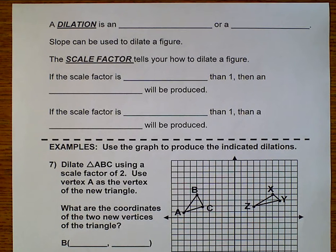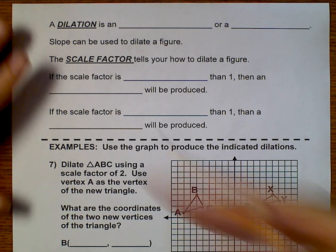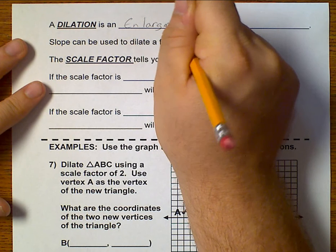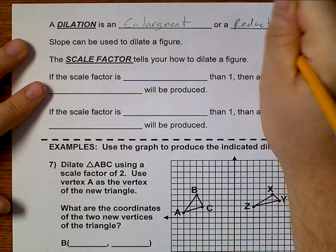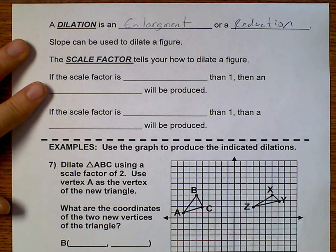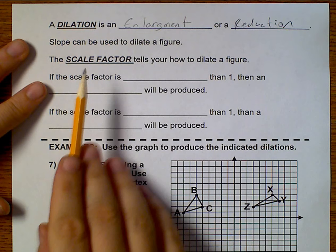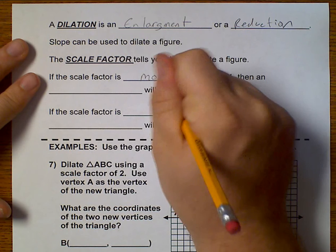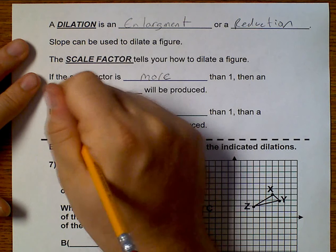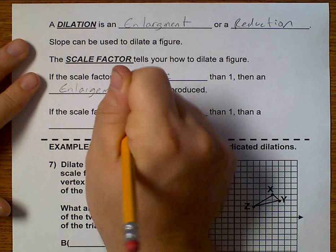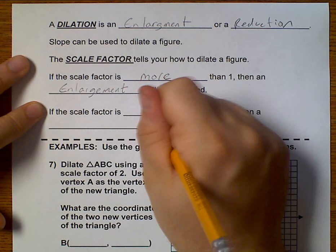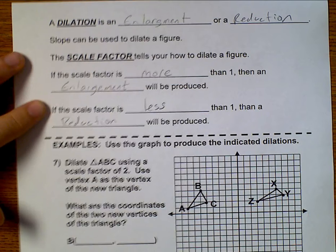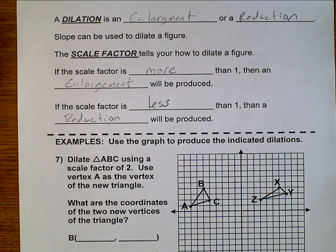Now we're going to change topics just slightly. We're going to talk about dilations. A dilation is an enlargement or a reduction. We're going to use slope to dilate our figures, and to do this we're going to talk about the scale factor. If a scale factor is more than one, then an enlargement will be produced. If a scale factor is less than one, then a reduction will be produced.